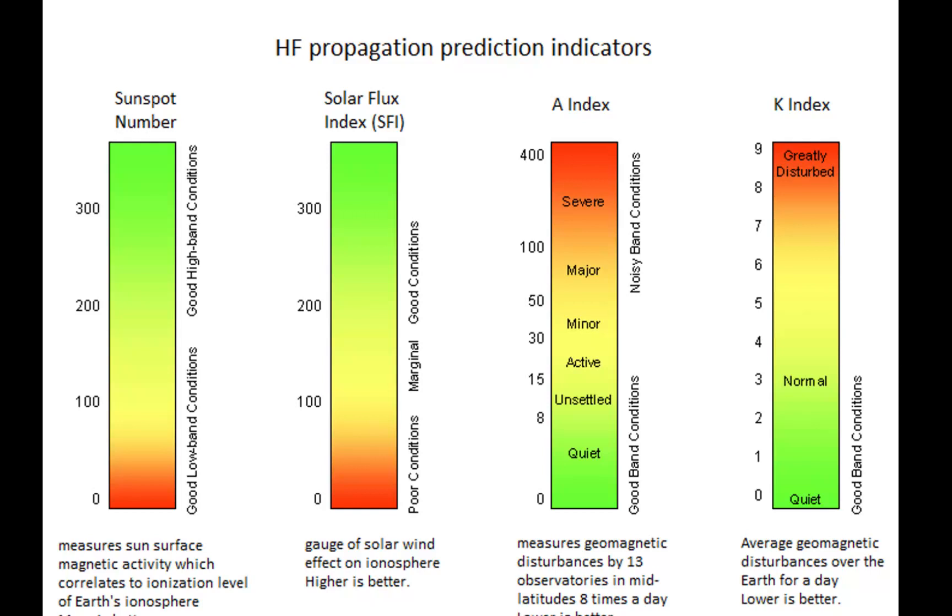Whereas the next question says, what does the A index measure? And the A index measures a long-term stability of the Earth's geomagnetic field. So A for average. Think about it, it's averaged over several days. The lower the number, the more quiet the magnetic field, the higher the number, the more severe the disturbance. So those are the A and the K index. Remember, K for kick, A for average.